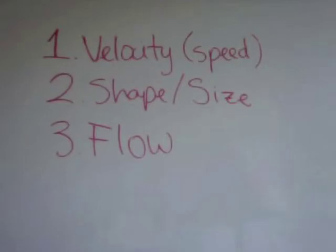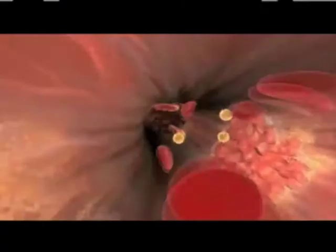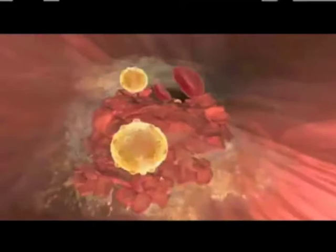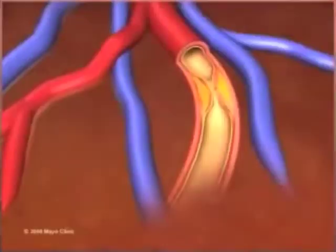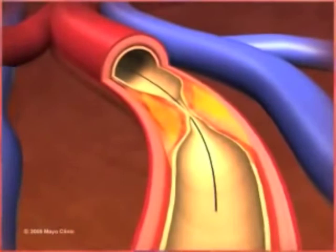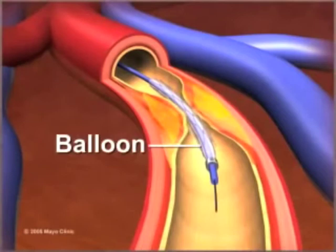For example, when arteries get blocked, the diameter becomes smaller and a higher blood pressure is required to maintain the same volumetric flow rate. To fix this, surgeons insert a stent to open up a blocked artery and restore the original fluid mechanics of the artery. Biomedical engineers look to the fluid mechanics of the artery to design a safe and effective stent.